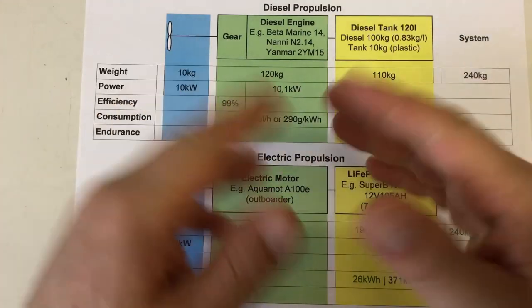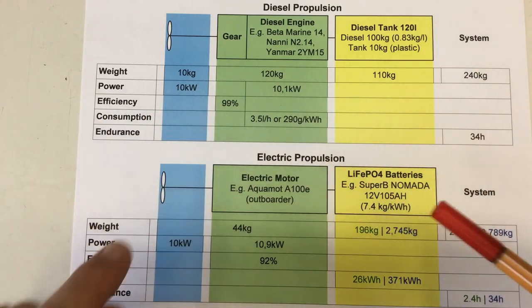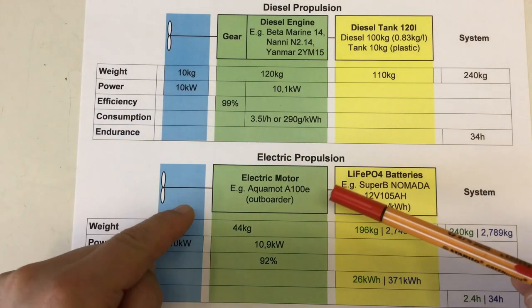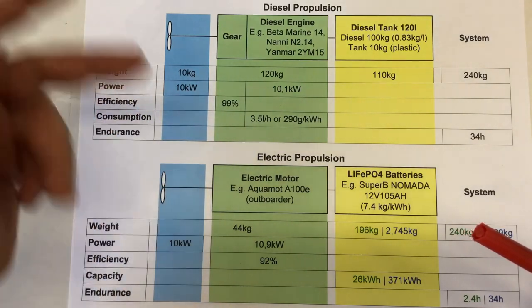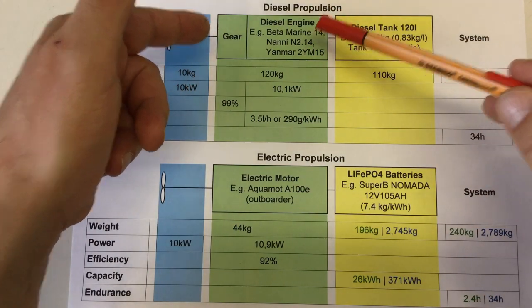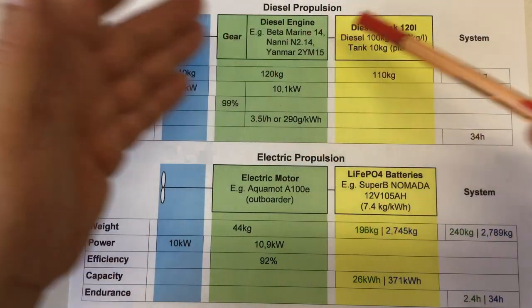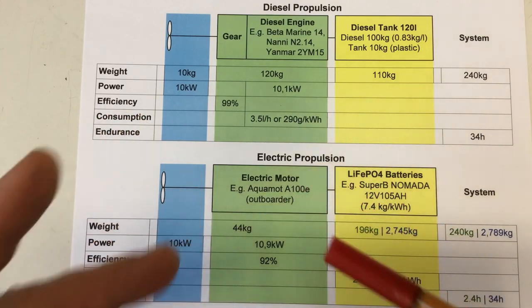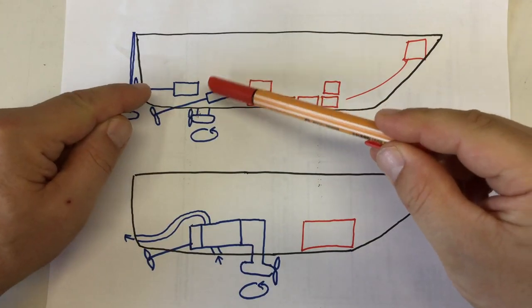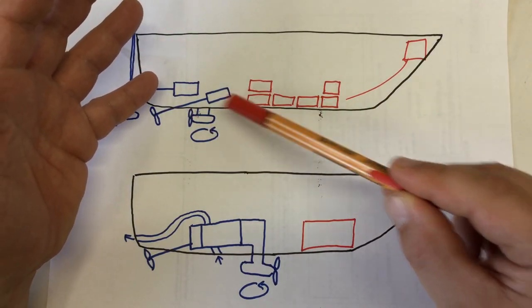An electric propulsion system is much easier to maintain than a diesel propulsion system. You basically have no maintenance except maybe exchanging your sacrificial zinc anode at the screw somewhere. But that's the same for the diesel propulsion. But for a diesel engine, you have to change the engine oil, sometimes the gear oil, the oil filters, etc. It's work to keep that thing running. And of course, your electric motor is quiet and doesn't stink like your diesel engine.